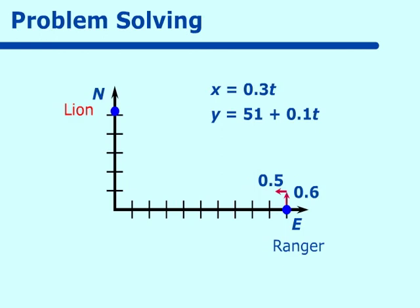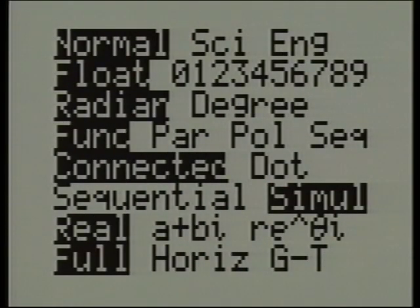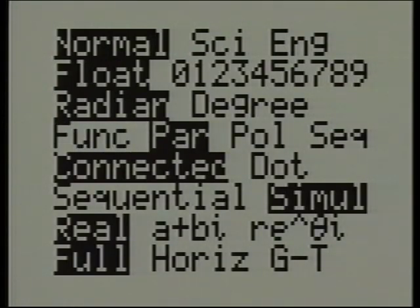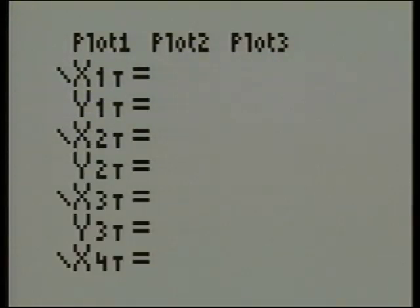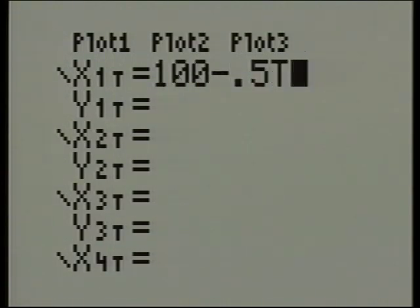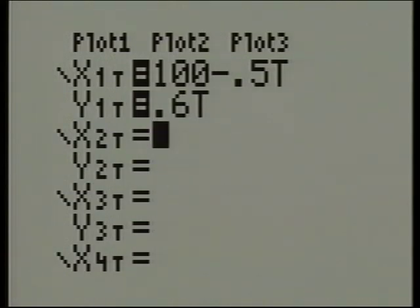So let's go to our calculator. Let's go down here to parametric. Now when I graph these, I want them to be graphed simultaneously, so I've also checked on simultaneous. So when we put our y equals up, we get x equals and y equals. Now let's put our equations in: 100 minus 0.5t for x and 0.6t for y.